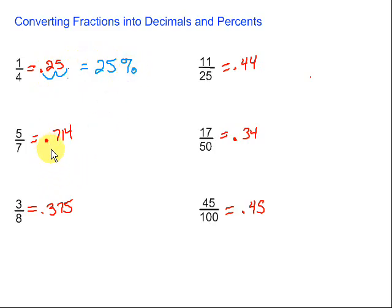Same thing here, whenever we're converting a decimal into a percent, we're always going to move it two places. Doesn't matter how many decimal places we have, it's always going to be two places to the right. So, two spots, one, two, we get seventy-one point four percent.